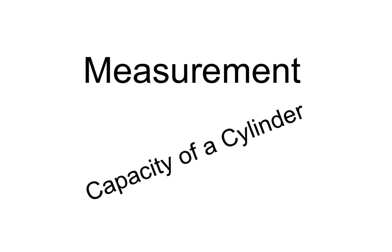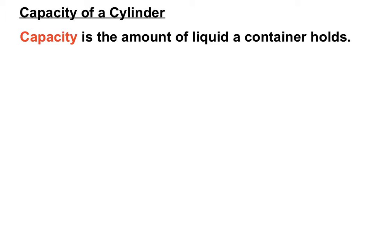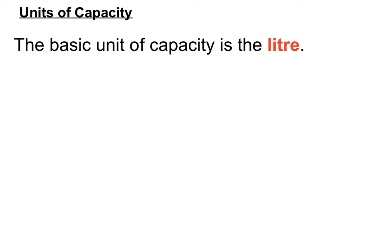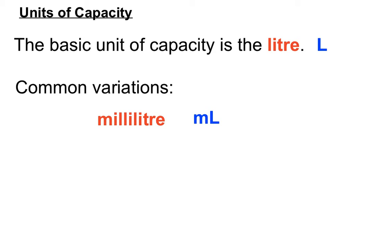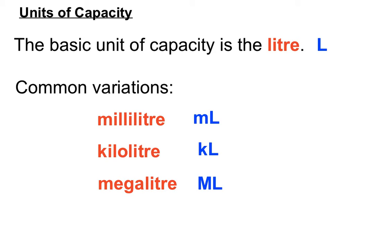Welcome to a measurement video exploring the capacity of a cylinder. Capacity is defined as the amount of liquid a container holds. The basic unit of capacity is the litre, with other variations being the millilitre, the kilolitre, and the megalitre. Note that the symbol for a megalitre is a capital M, but the symbol for a millilitre is a lowercase m — so be careful of that difference.